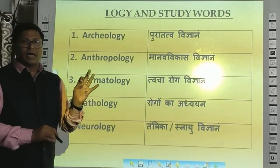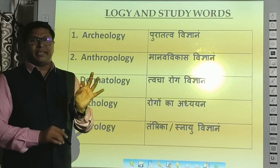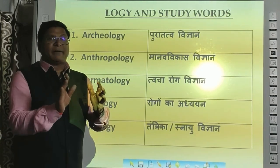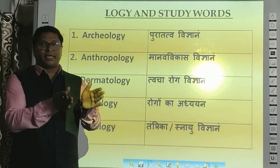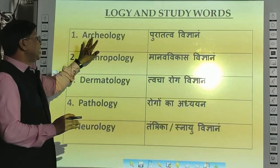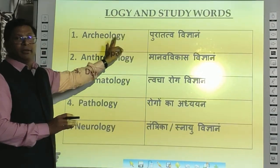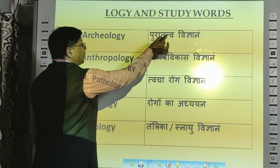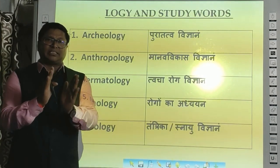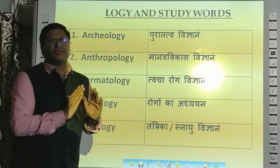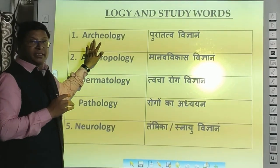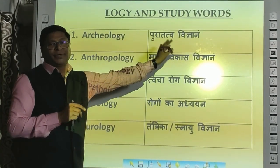Let's start with the first word: Archaeology. This word is very famous — in Ayodhya's reference you can see this word, as archaeologists have given this kind of visualization. Archaeology is made from 'arch' and 'logy.' Archaeology means Pura Tattwa Vigyana — when you study history or prehistory through excavation of sites, that science is called Archaeology — Pura Tattwa Vigyana.